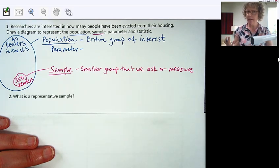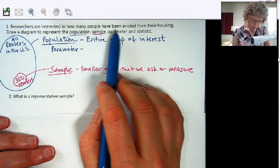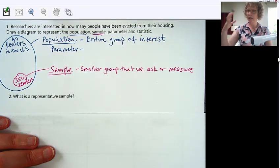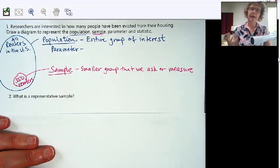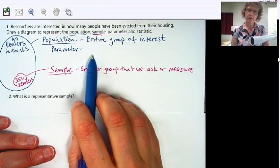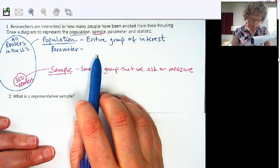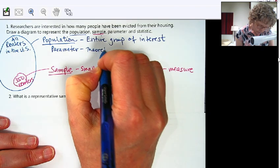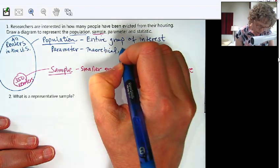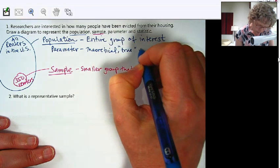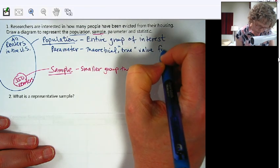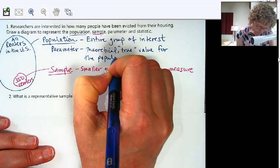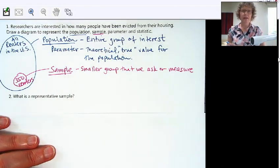The parameter is what we are interested in finding out. Now that's the thing that we want to know. So this is how many people have been evicted. We want to know how many people in the entire US, renters, have been evicted. So this is a theoretical value that we want to know. It's the theoretical, we could say true, value for the population.